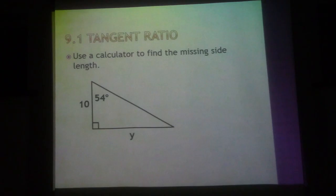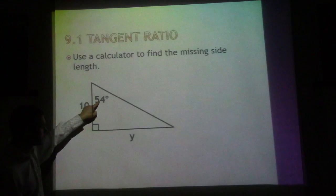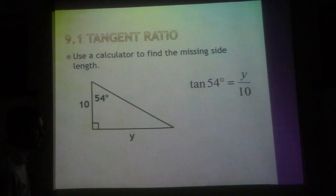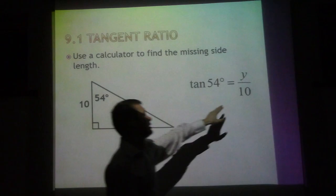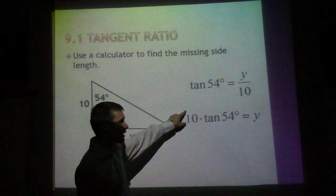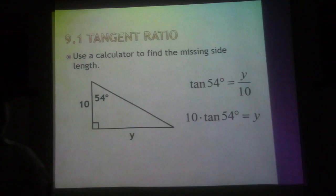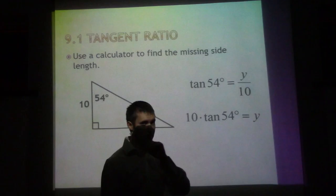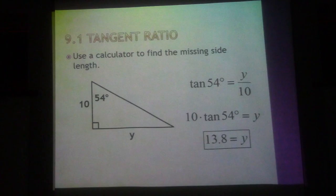We want to use a calculator to find the missing side length. This would be tangent of angle 54° equals Y over 10. How do I get rid of 10? I multiply by 10. So you can type this into your calculators: 10 times tangent 54°. One thing we'll go through in class tomorrow is making sure it says 54 degrees on your calculator. You would get 13.8 equals Y.